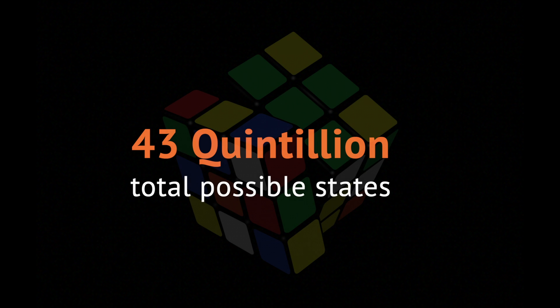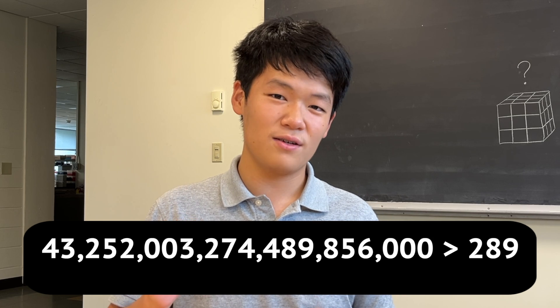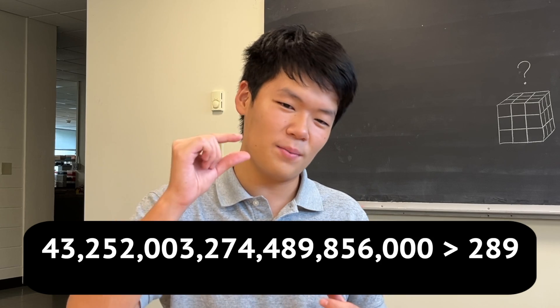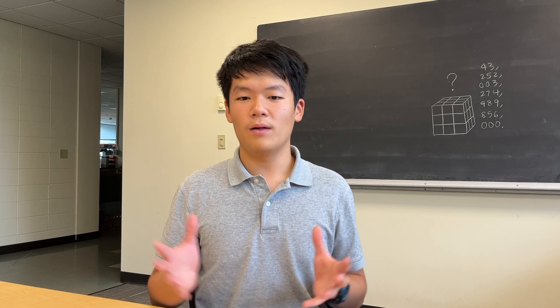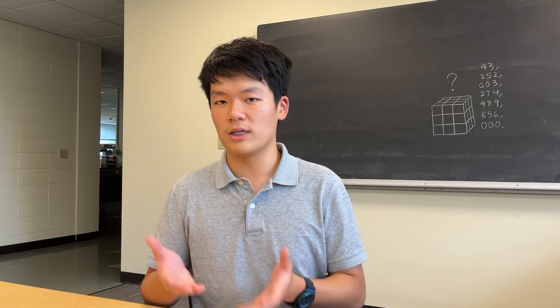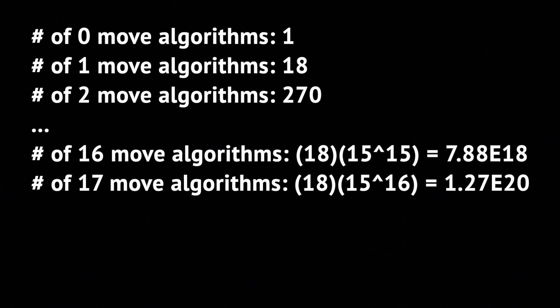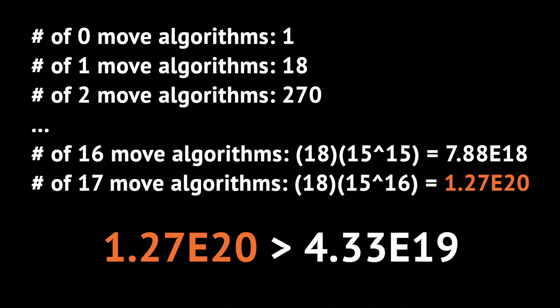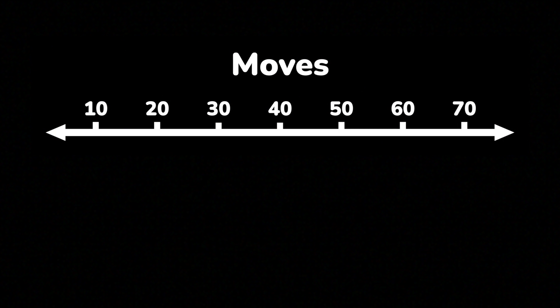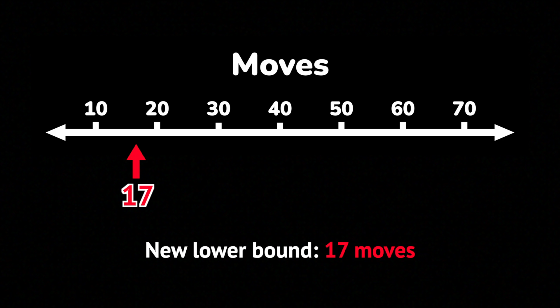This amounts to 289 unique scrambles of length less than or equal to two. Thus, since there are 43 quintillion different scrambles, last time I checked, 43 quintillion is just a little bit higher than 289. Well, thus there are 43 quintillion possible scrambles, God's number must be greater than two. If you repeat this process, you will eventually find that the set of algorithms capped at 17 moves long will reach the threshold of 43 quintillion. Therefore, the lower bound of God's number is 17, if not larger.